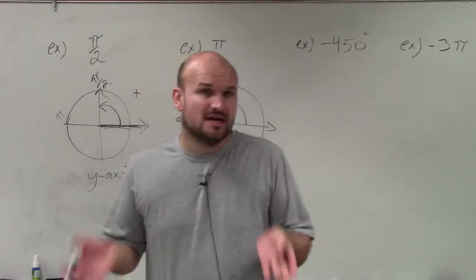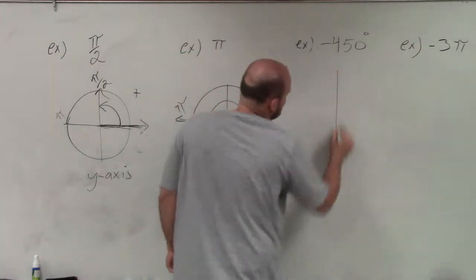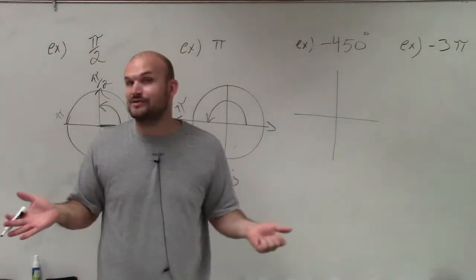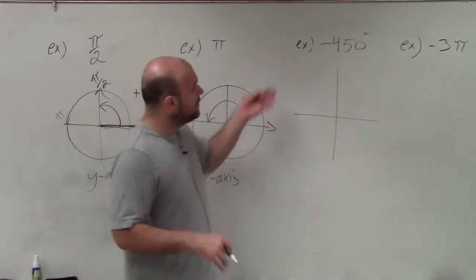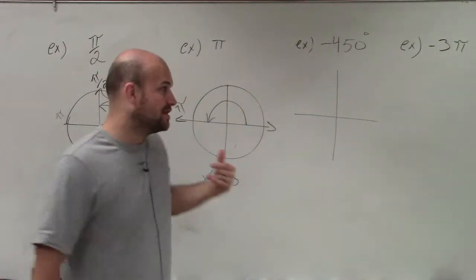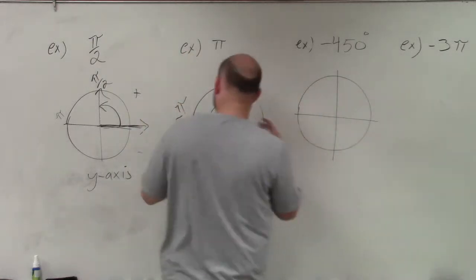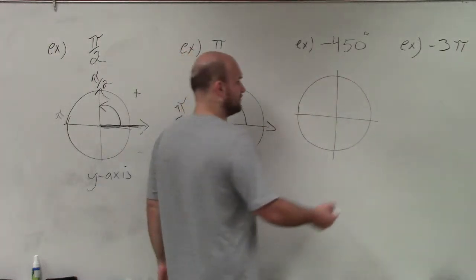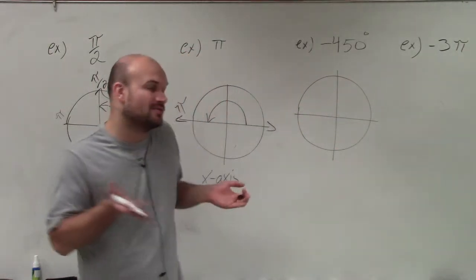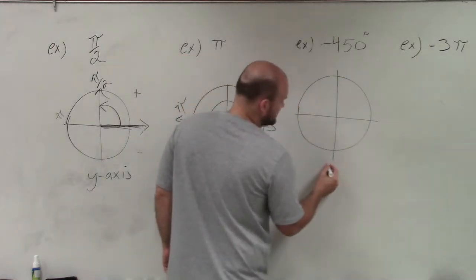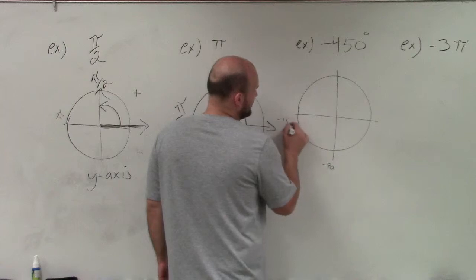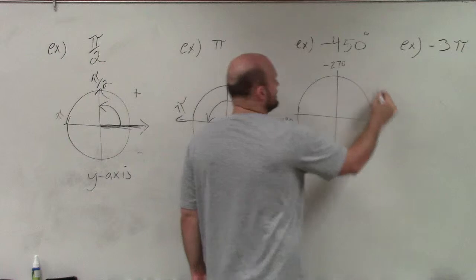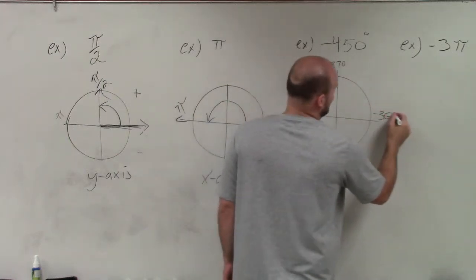Now we have negative 450 degrees. When we're doing degrees, a lot of students like it because it's a little easier to remember — going around a circle is 360 degrees, half of a circle would be 180. The important thing to notice is we have a negative angle, so instead of going counterclockwise like the first two examples, now I'm going to go clockwise. The measurements are still the same; it's just the direction that's negative. Going down is negative 90, negative 180, negative 270, and all the way around clockwise would be negative 360.